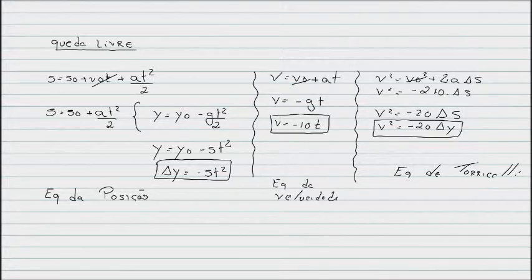But when we talk about free fall, every time we have free fall, the initial velocity of this body is zero. So we cut this equation, because zero times t is zero.